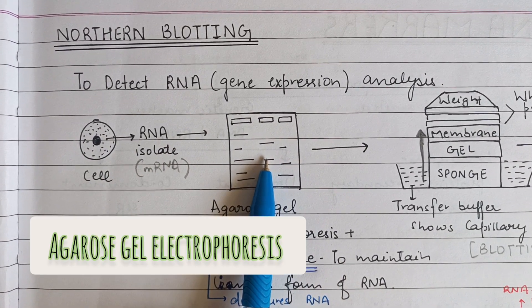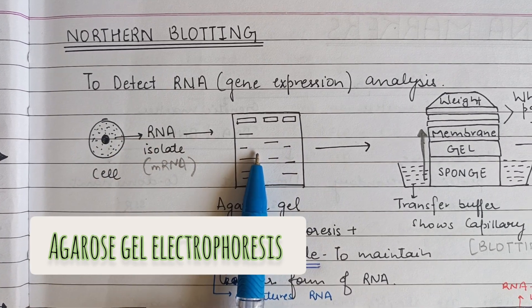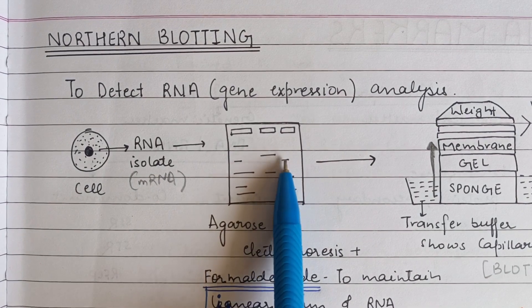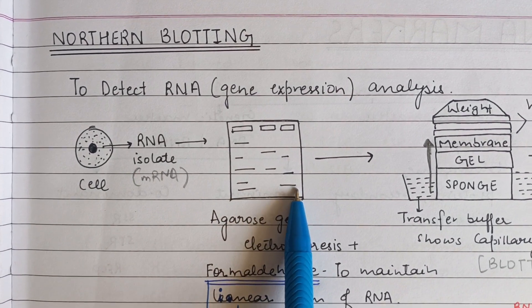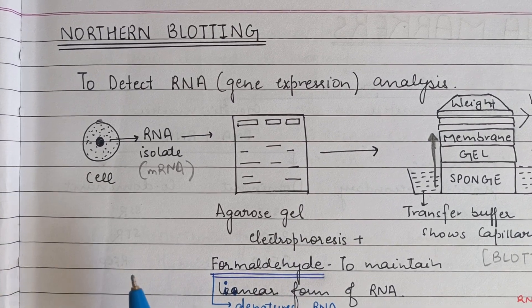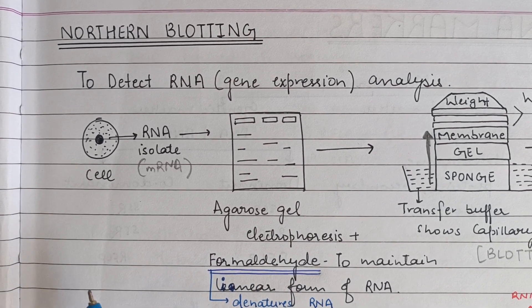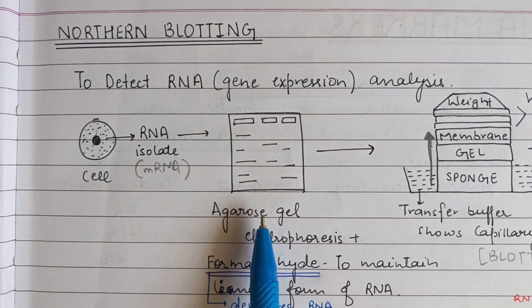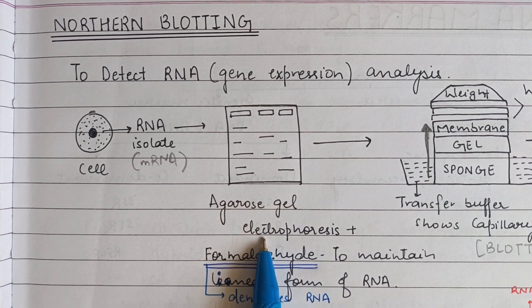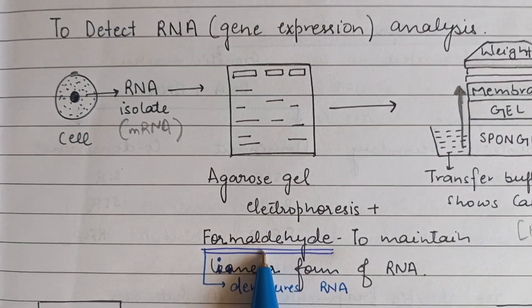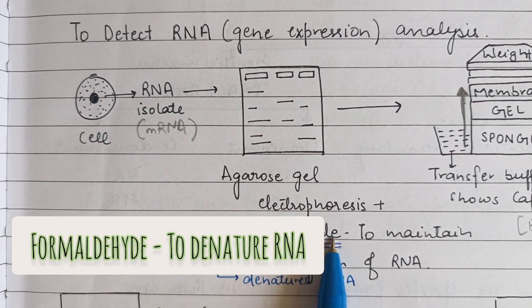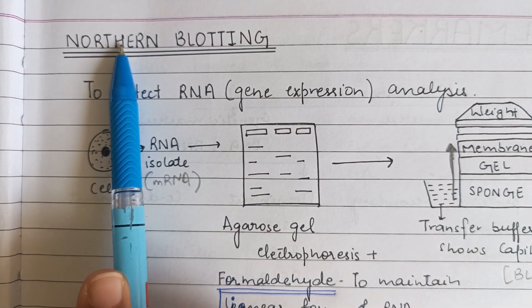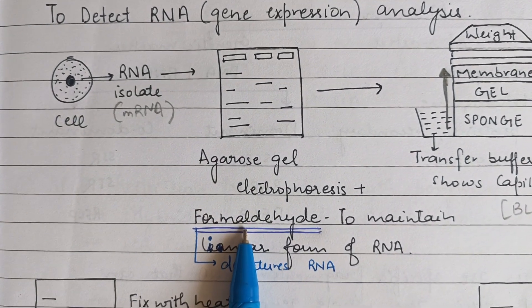We now have isolated mRNA as a sample, which is subjected to agarose gel electrophoresis. As the mRNA is run through the agarose gel, we can observe different bands of RNA. The agarose gel electrophoresis is similar to what is performed in Southern Blotting, with one key difference: in Northern Blotting we add the chemical formaldehyde to the gel.